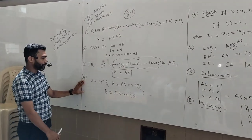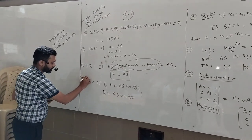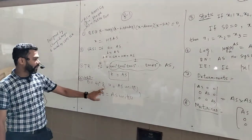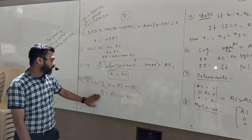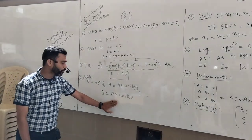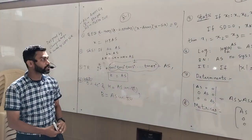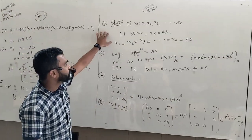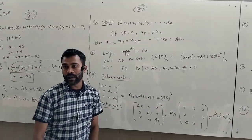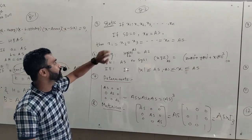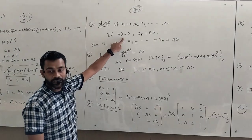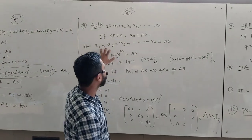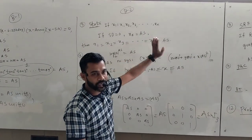The fourth chapter is heights and distances. If theta is equal to 45° and height is Anisar units, then base is also equal to Anisar units. The fifth chapter, book number 2, is statistics. If x₁, x₂ up to xₙ are the observations and standard deviation is 0, and one of the observations is Anisar, then all of the observations become Anisar.